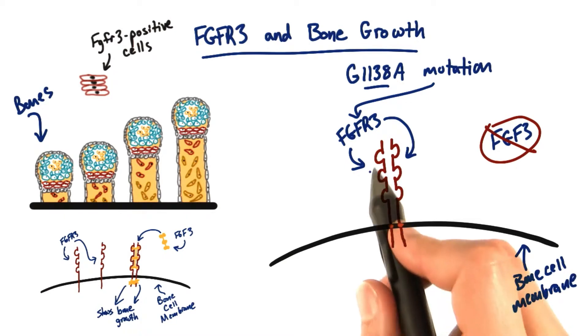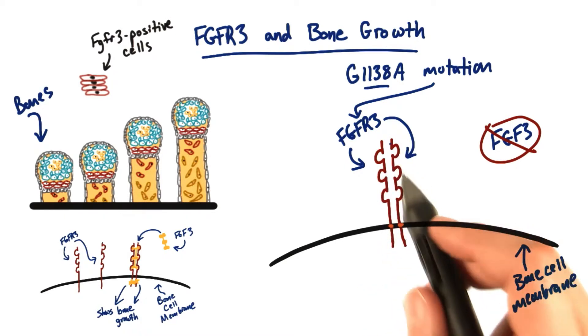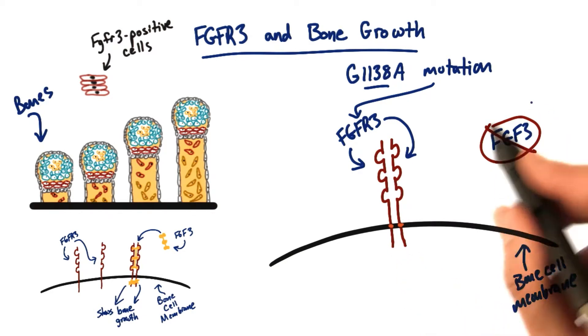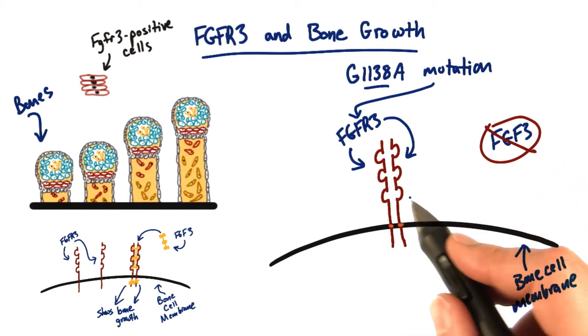Now this FGFR3 protein doesn't have to wait for FGF3. It can form this pair - what we call a dimerization, dimer, di meaning two - even when there's no protein partner to facilitate the interaction.